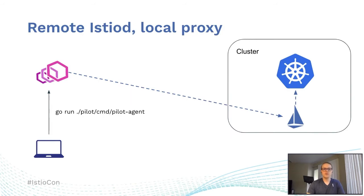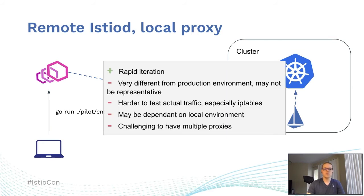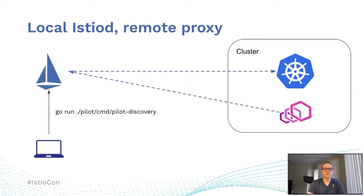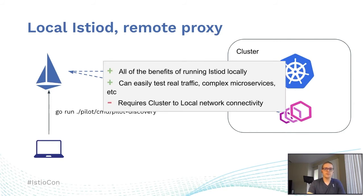There are also some variations of this where we could run just the local proxy but have istiod running in the cluster — like doing a port-forward to istiod. This is pretty simple with a lot of the same benefits, but also the same issues as the previous setup. If we're just trying to develop the proxy, we may not care to run Istio locally. We can also do the inverse: running istiod locally but the proxies remotely. This has all the benefits of running istiod locally plus the benefits of running the proxy in the cluster, though it does require connectivity from the cluster to the local network.